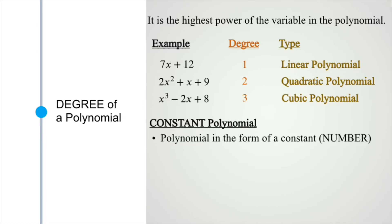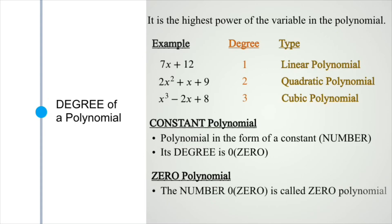We can write x raised to zero in multiplication with any number, hence its degree is zero. Here you can multiply zero with any power of the variable x, hence its degree is not defined.